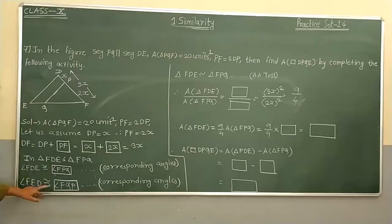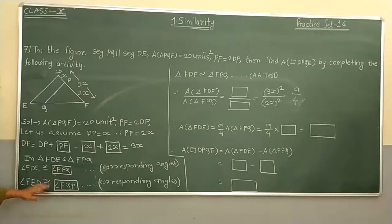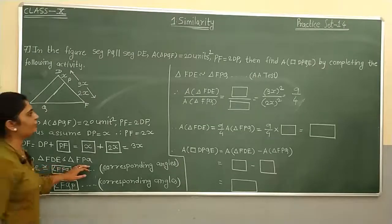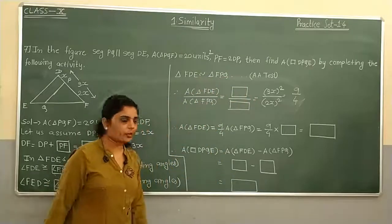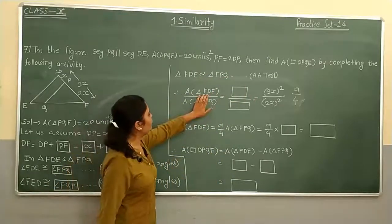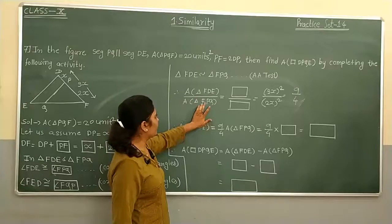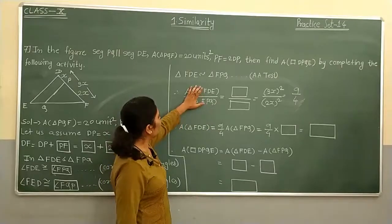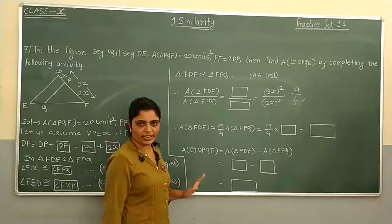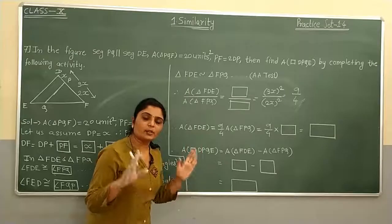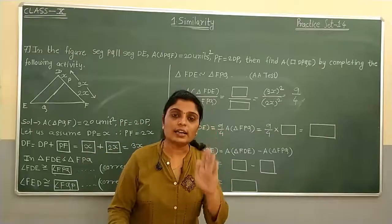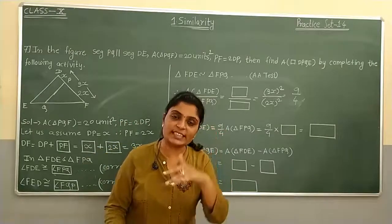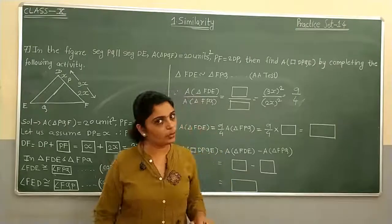Two pairs of corresponding angles are congruent, so triangle FDE is similar to triangle FPQ by the AA test. By the theorem of areas of similar triangles, the ratio of areas of any two similar triangles equals the ratio of the squares of their corresponding sides.